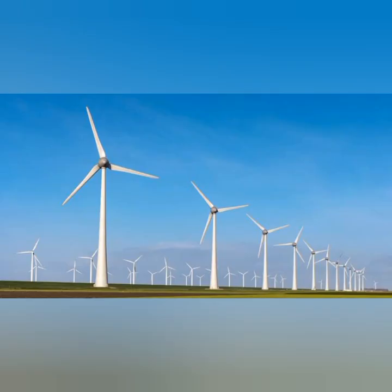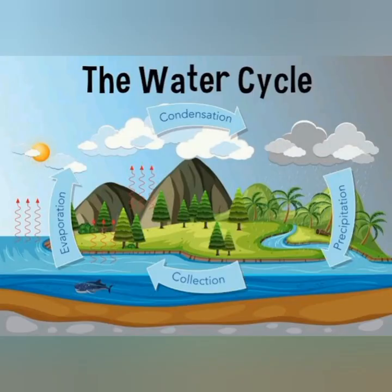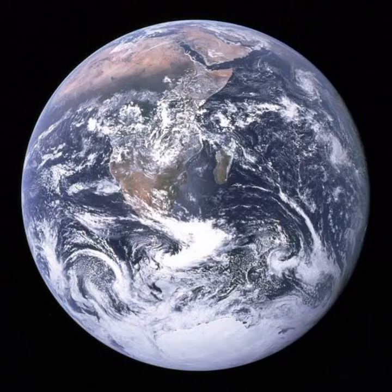Air in the form of wind helps in the working of windmills for generating electricity. Air also plays an important role in the water cycle. We can say that air is important for the sustenance of life on earth, and we are lucky that our earth is a unique planet due to the presence of air.